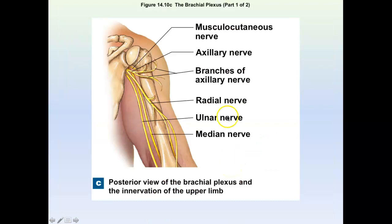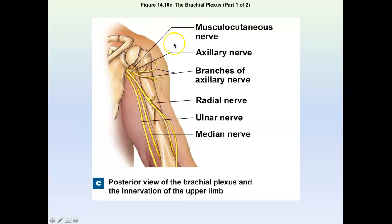The brachial plexus — you need to know all of the nerves that arise from it. Since brachium means arm, all of these go to the shoulder and the arm. The first is the axillary nerve. If you look at a nerve that comes away and just stops in the shoulder, that's going to be the axillary nerve. The axillary nerve innervates muscles of the shoulder such as the deltoid and the teres minor. It also brings any sensation from the shoulder to the brain — so if you tap someone on the shoulder, you feel that because of the axillary nerve.